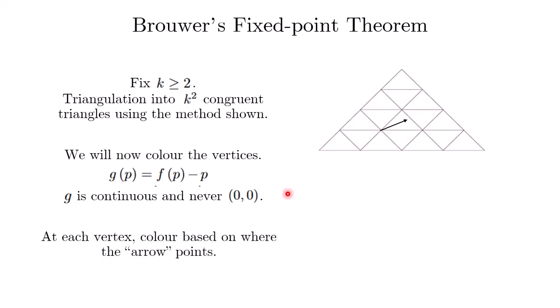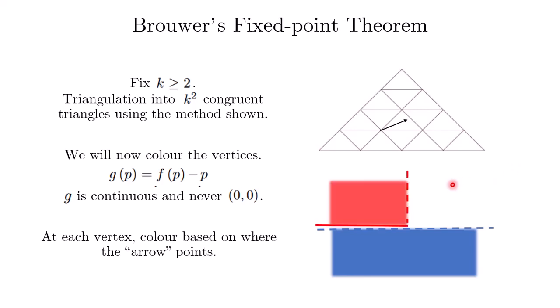At each vertex, we color the vertex based on where the arrow points. If the arrow points with a strictly negative y value, we color the vertex blue. If the arrow points with non-negative y but strictly negative x, we color it red. If the arrow lies with non-negative y and non-negative x, we color the vertex green.